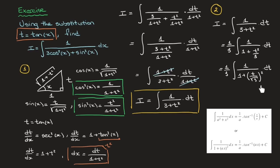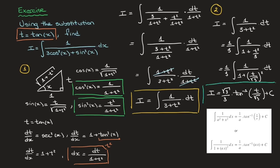Now that it's written this way, it becomes clear how to use the second standard result. Using that result, I can state that I equals square root of 3 over 3 times arctan of t over the square root of 3, plus some constant of integration c. That's step 2 done — we've integrated with respect to t.